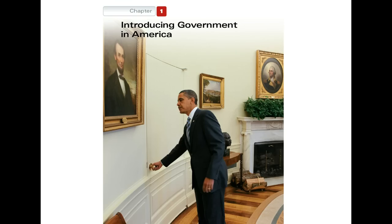Thousands of state and local governments also make policies that influence our lives. There are roughly 500,000 elected officials in the United States, meaning policies that affect you are being made almost constantly. Because government shapes how we live, it is important to understand the process by which decisions are made, as well as what is actually decided.